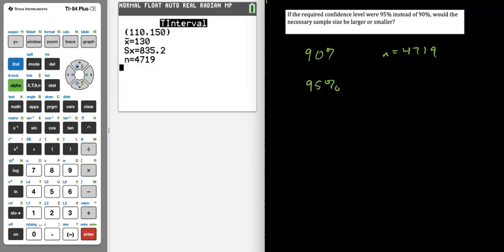So if you want to have a higher level of confidence, if you want to go from 90% confidence to 95% confidence that your true population mean is inside that interval, the only way that you can do that when your margin of error is still going to be 20 is if you have a little bit more information, if you have a little bit more data. And more information or more data equates to a larger sample size.